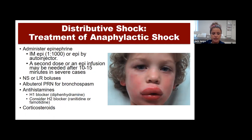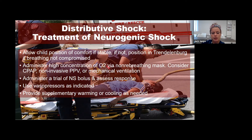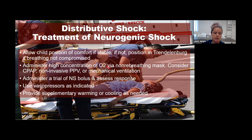Treatment of anaphylactic shock: IM epinephrine, with a second dose or epi infusion for severe cases; normal saline bolus; albuterol as needed for bronchospasm; antihistamines with an H1 blocker plus an H2 blocker; and corticosteroids. For neurogenic shock: position of comfort if stable, or Trendelenburg if it doesn't compromise breathing; high concentration oxygen; consider CPAP, non-invasive PPV, or mechanical ventilation; administer a trial fluid bolus and reassess; use vasopressors as indicated; and provide supplementary warming or cooling to normalize temperature.